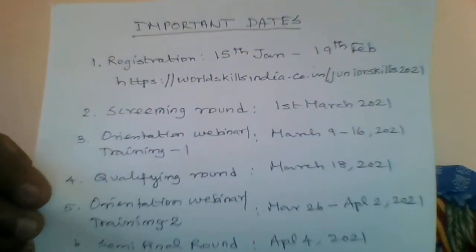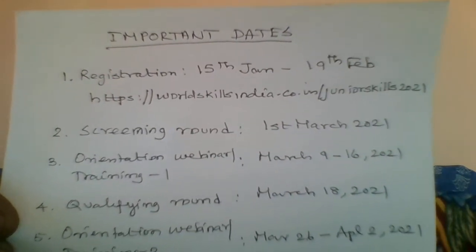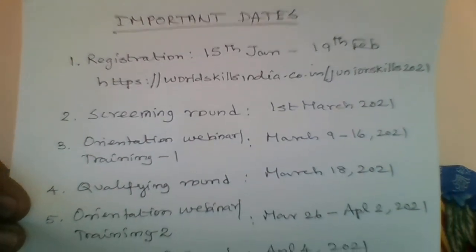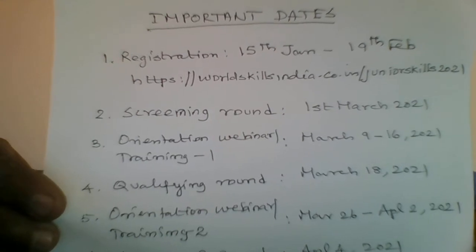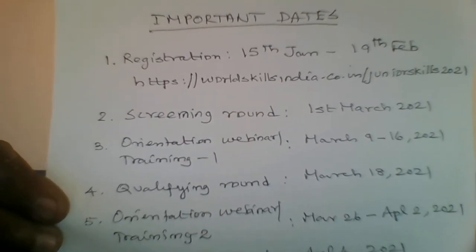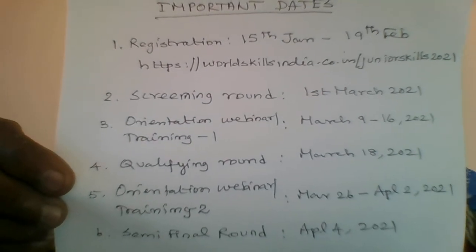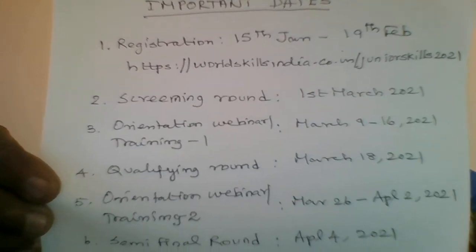Now let's look at how to register and the important dates. Registration started on 15th January and will close on 19th February. The portal link is worldskillsindia.co.in/juniorskills2021.